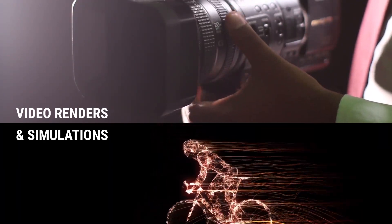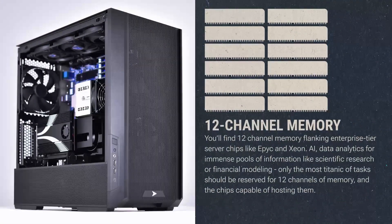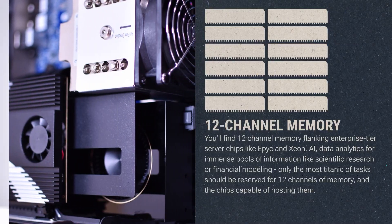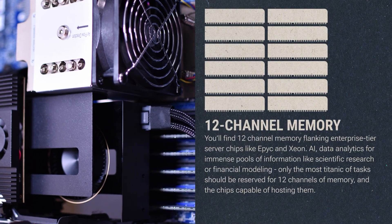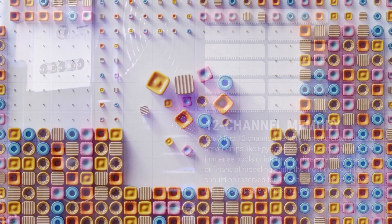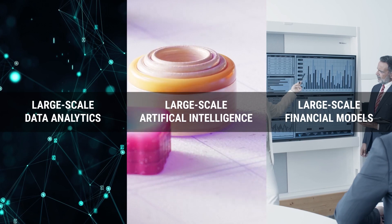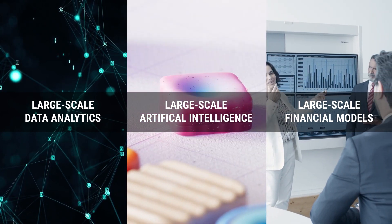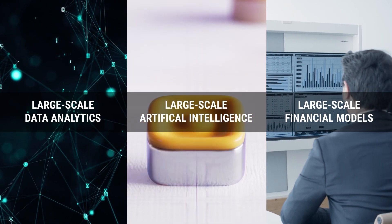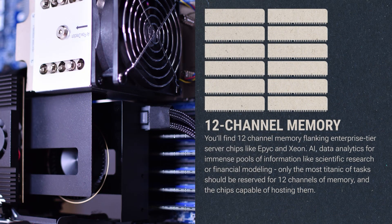12-channel memory is a category unto itself — oftentimes the folks who go this far already know what they're getting it for. You'll find 12-channel memory flanking enterprise-tier server chips like EPYC and Xeon. Artificial intelligence, data analytics, and immense pools of information like scientific research or financial modeling — only the most titanic of tasks should be reserved for 12 channels of memory and the chips capable of hosting them.